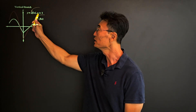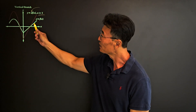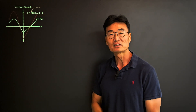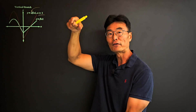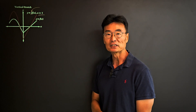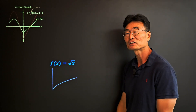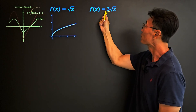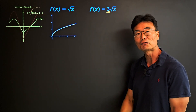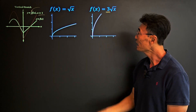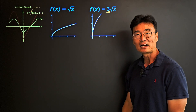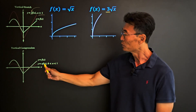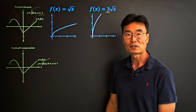Vertical stretch is when you multiply a number greater than 1 in front of the function. The yellow graph is the original f(x) and the red graph shows f(x) stretched vertically by a factor of a. For example, using f(x) = √x, if we multiply by 3 in front, it gets vertically stretched by a factor of 3.